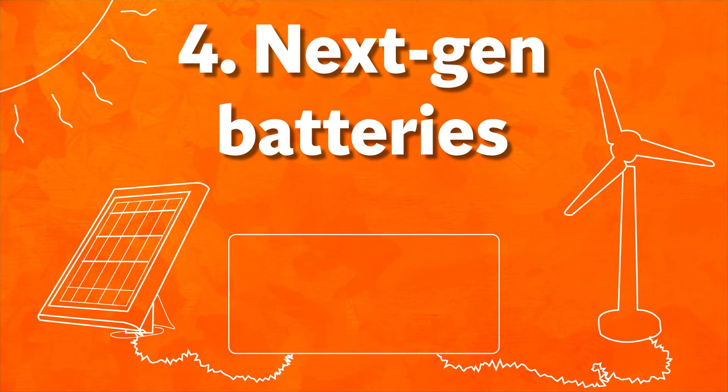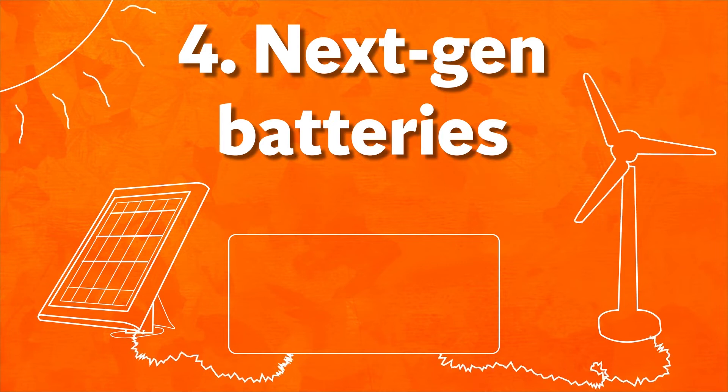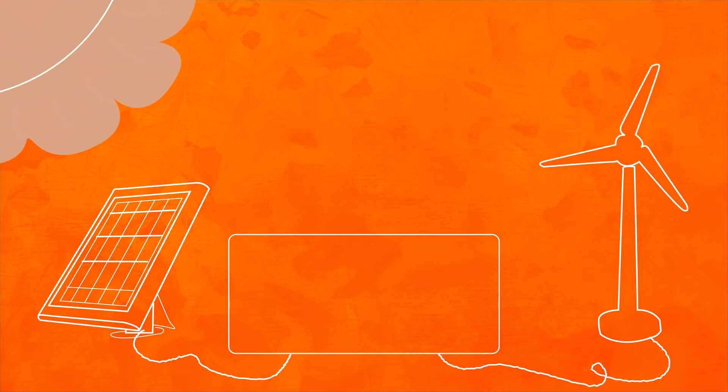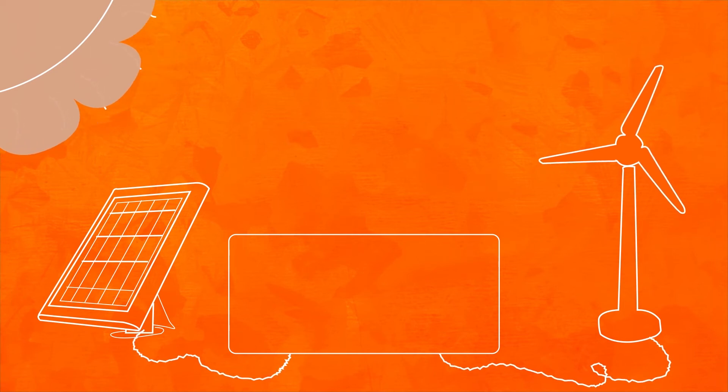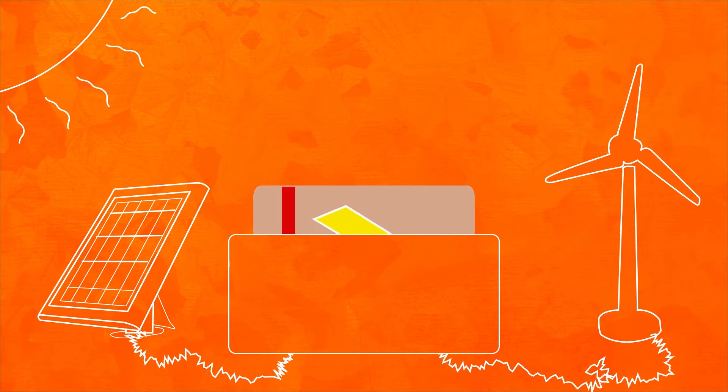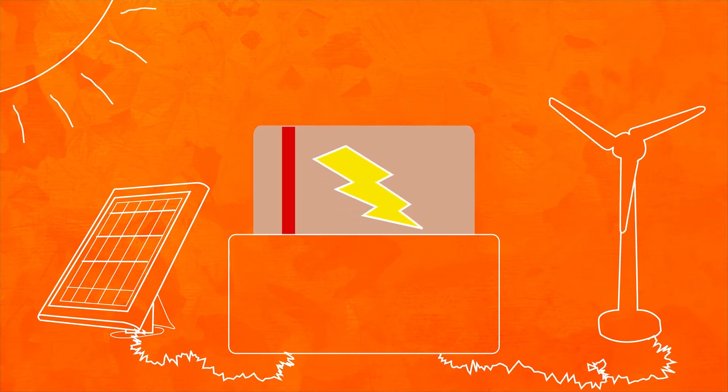Renewable energy produces fewer greenhouse gas emissions than traditional fuel, but the downside is that they can only be run under the right conditions. If we are ever going to switch entirely to renewables, we need to be able to capture the energy created at times of high production, and then release it back into the grid when it's needed, using batteries.